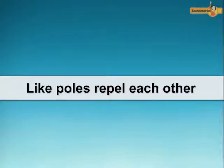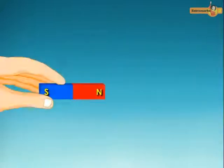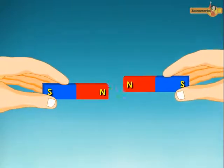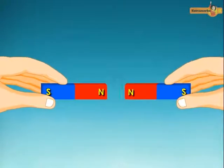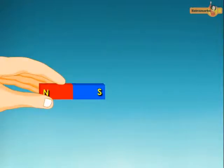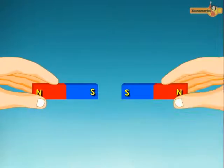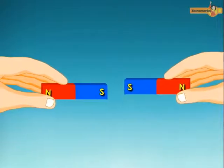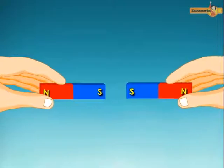Like poles of magnets repel each other. When the north pole of one magnet is brought close to the north pole of another magnet, the two poles repel each other. Similarly, on bringing the south pole of one magnet close to the south pole of another magnet, the two poles again repel each other.